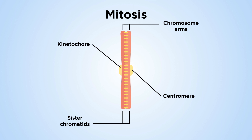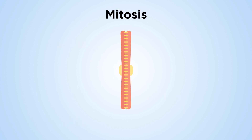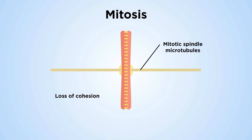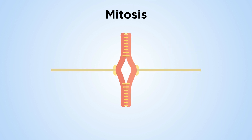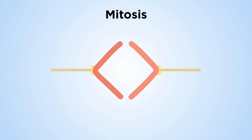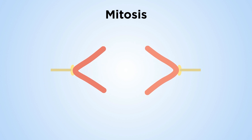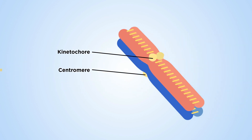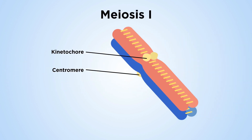Sister kinetochores lie back to back and face in opposite directions. During mitosis, chromosome cohesion is gradually lost over the entire length of the chromosome, as sister chromatids separate and move to opposite poles in anaphase.